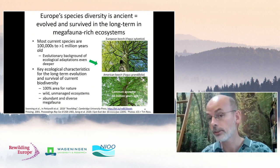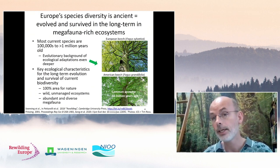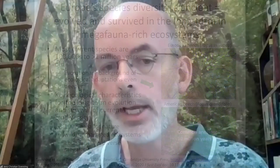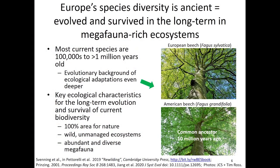This tells us how old the adaptations to be a beech tree are — it's not something that arose in our cultural landscapes; it's a super ancient thing. One of the important things to think about is: what are the key ecological characteristics that allowed the long-term evolution and maintenance of our current biodiversity? Over most of this time there has been 100% area for nature — space is super important. These ecosystems have been wild and unmanaged, and our species are not adapted for management. Most consistently, historical wild ecosystems have had abundant and diverse megafauna.